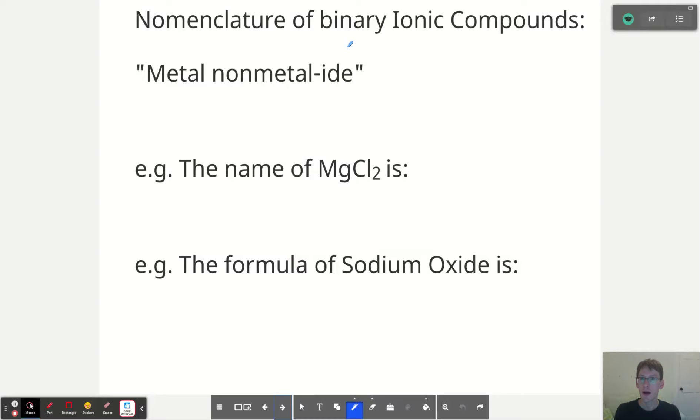So a binary ionic compound, first of all, we need to understand what it is. When I say binary, I mean that there are two elements. And when I say ionic compound, I mean that it's going to be something where there's a metal and a nonmetal.